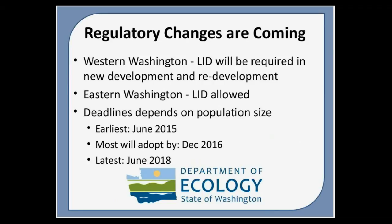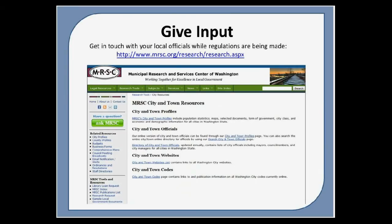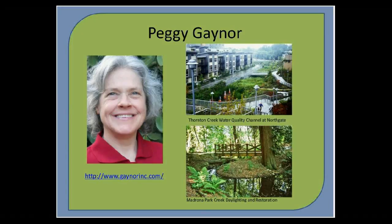In western Washington, regulations will require the use of low-impact development on new development or redevelopment projects like housing or commercial developments, to help manage stormwater on-site. In eastern Washington, the use of LID will simply be allowed. Each city and county will decide on how to adopt these changes. The Department of Ecology stormwater regulations will be the minimum; some cities and counties may expand upon these. Check with your local planning departments to understand exactly how these regulations will be applied in your area. Because cities and counties are currently determining how they will adopt these new regulations, now is a good time to get in touch with your local officials. The Municipal Research and Services Center of Washington is a great resource for finding the right officials to contact.